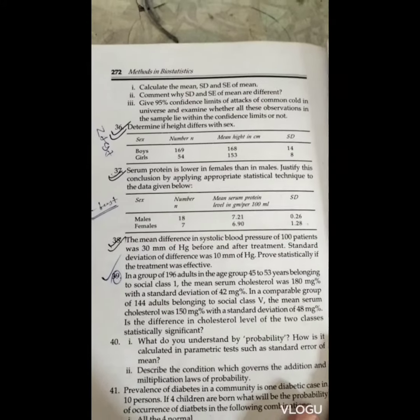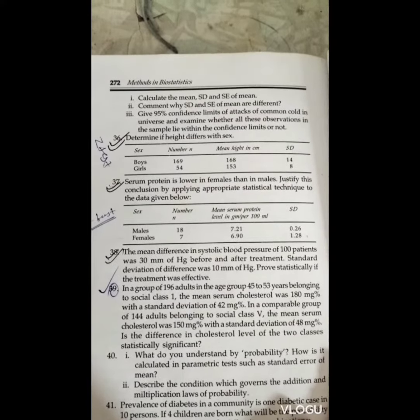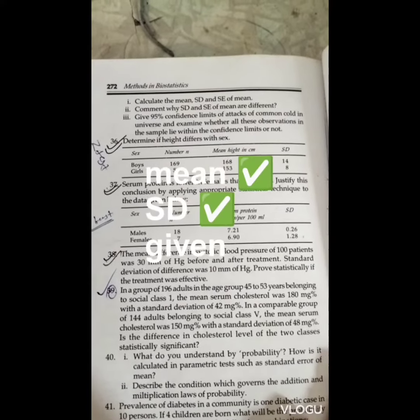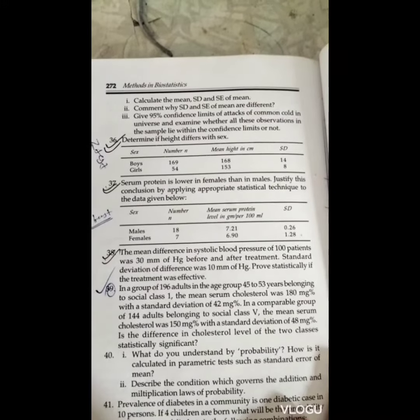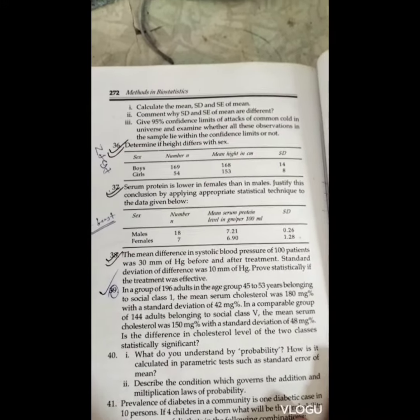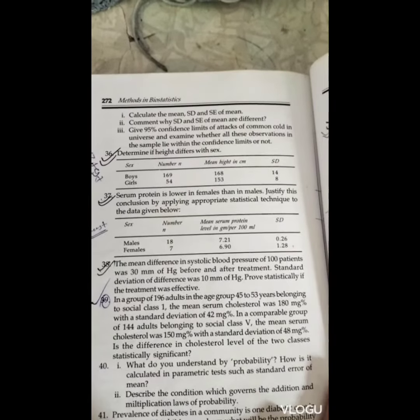Mean height in centimeters for the boy is 168, for the girl it is 153. For boys the standard deviation is 14 and for girls the standard deviation is 8. In this observation we have given the number of observations, mean height and standard deviation.